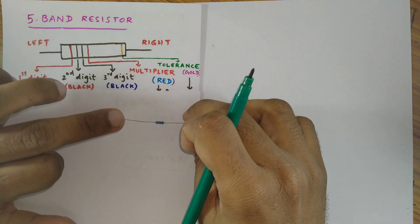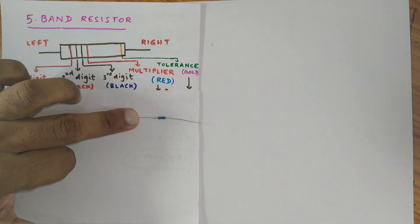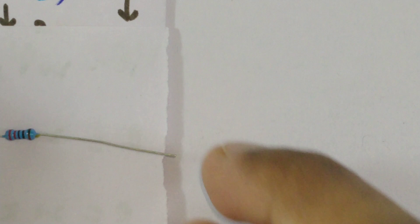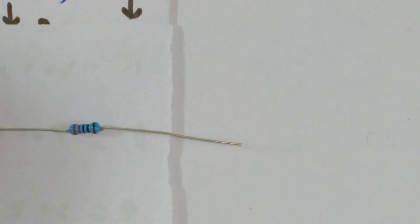Here I have a 5 band resistor. Let me zoom to show you clearly. If you look at this carefully you may find this resistor has got 5 bands.